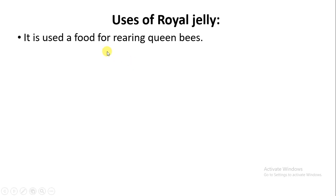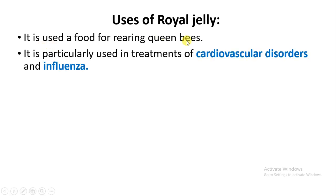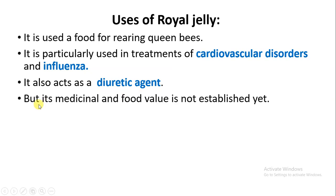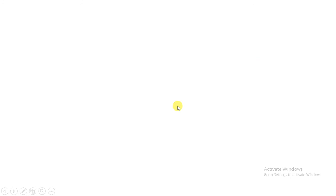Royal jelly is a food of the queen and of the larval developmental stages, and it is used for rearing queen bees. It is also used for the treatment of heart diseases such as cardiovascular diseases, and also influenza, which is a viral infection attacking the lungs and nose. Additionally, it acts as a diuretic agent — it acts on the kidney to increase excretion of water and sodium, thereby reducing blood pressure. However, its medicine and food value is not yet fully established.